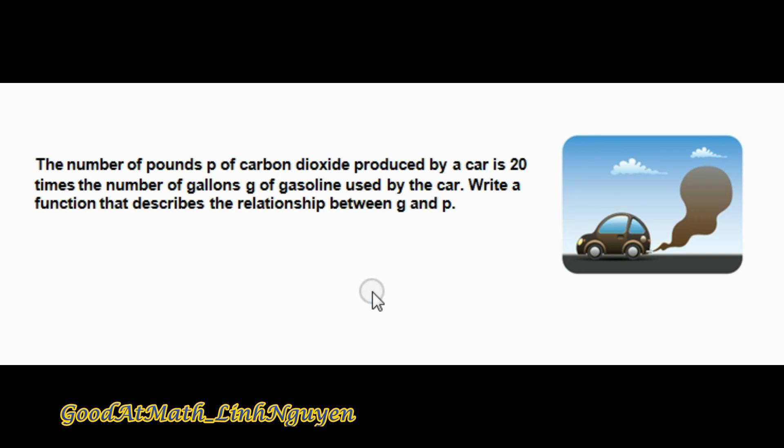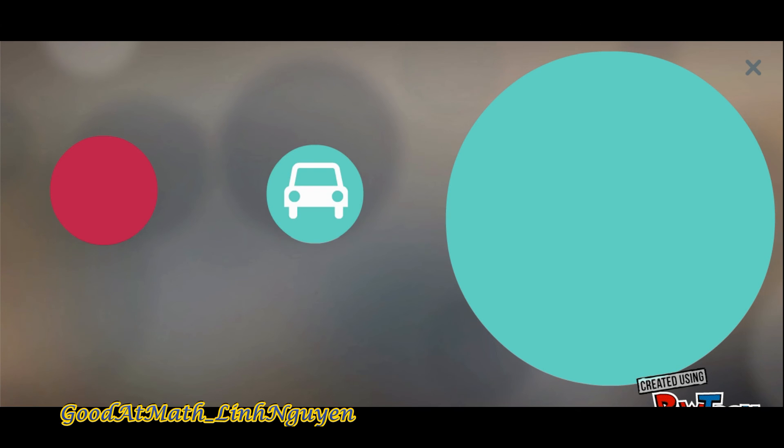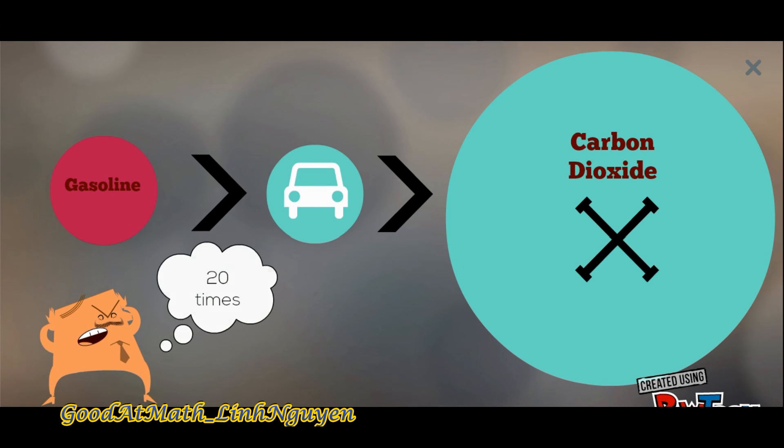I give you another example. The number of pounds P of carbon dioxide produced by a car is 20 times the number of gallons G of gasoline used by the car. Wow, this information is not really easy to hear at all.